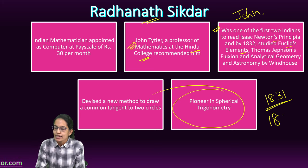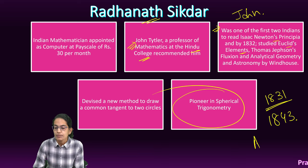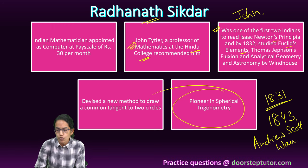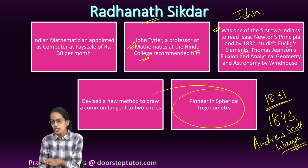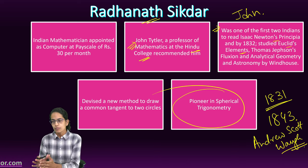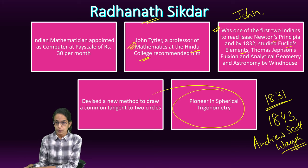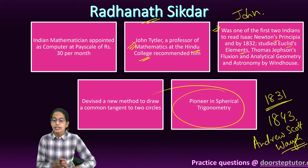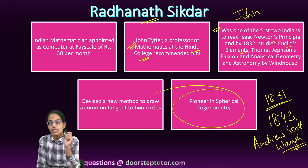George Everest retired in 1843 and was succeeded by Andrew Scott Waugh. Andrew Scott Waugh continued the work, and Radhanath Sikdar — initially posted in the regions of Sion — was later given a permanent position as Chief Computer in Kolkata. One of the missions Waugh involved him in was measuring the height of mountains.